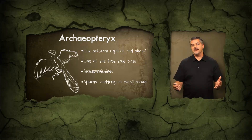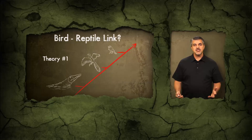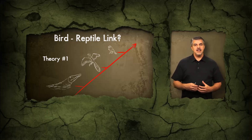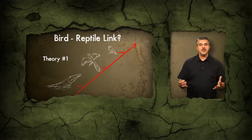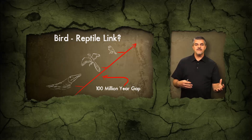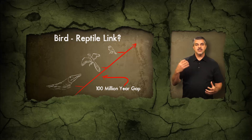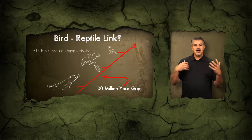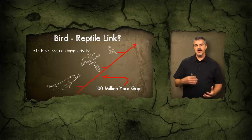Archaeopteryx appears quite suddenly in the fossil record without any true transitional form leading up to it. For many years, scientists thought the way to explain the origin of birds is that they evolved from an ancient reptile known as a thecodont. But the problem is there's a hundred-million-year gap between thecodont appearance in the fossil record and when Archaeopteryx appears, and there are no transitional forms connecting this ancient reptile to the very first birds. Moreover, thecodonts and birds really lack similar characteristics, undermining any evolutionary connection.